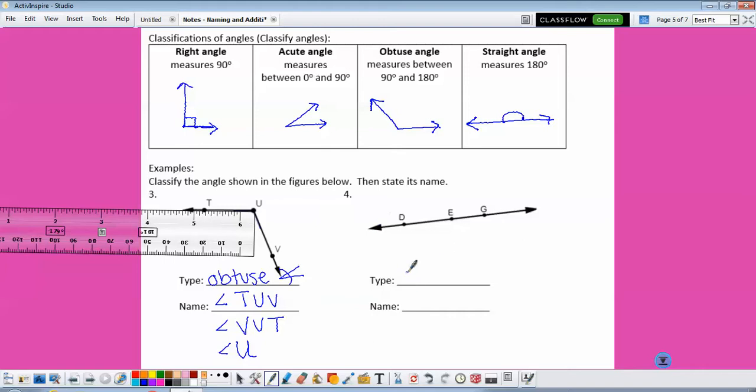Number four is a straight angle. The reason we call it a straight angle and not a line is because it said classify the angle. So this would be angle DEG, or angle GED, or just angle E.